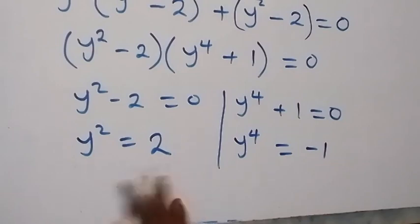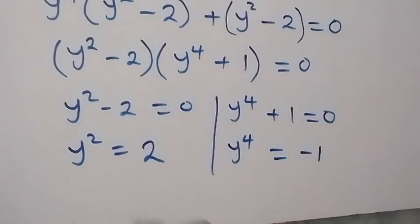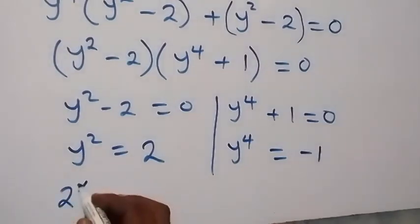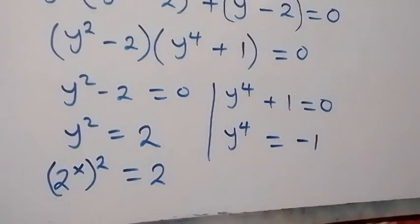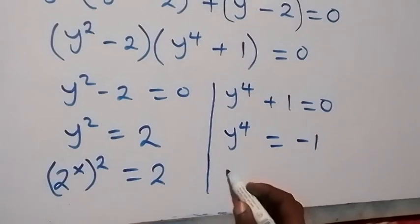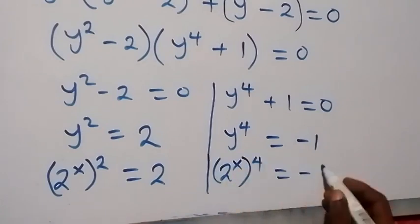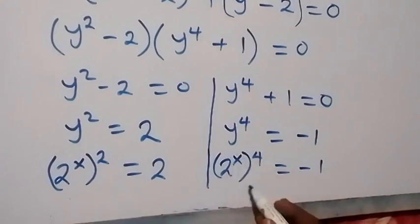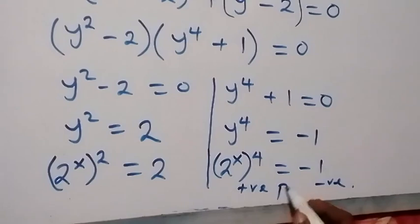We should recall that we let y be equal to 2 raised to power x. Since y is 2 raised to power x, that means 2 raised to power x raised to power 4 equals minus 1. This side is expected to be positive and this also is a positive number, so the first case is accepted. But here, 2 raised to power x raised to power 4 equals minus 1 — this is negative, so this will be rejected. On the accepted side, this power multiplies and this becomes 2 raised to power 2x, now equals to 2 raised to power 1, so we have same base.